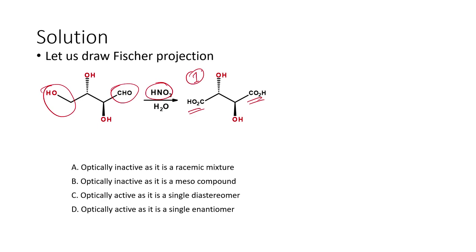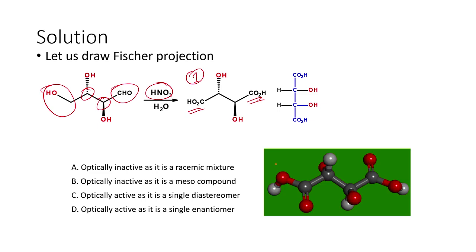Now we have to find the configuration of each chiral center and determine whether it is optically active or inactive. There are two stereogenic carbons or chiral centers present in this compound. We can draw the Fischer projections as we have seen earlier for this particular compound, and here is the three-dimensional structure.